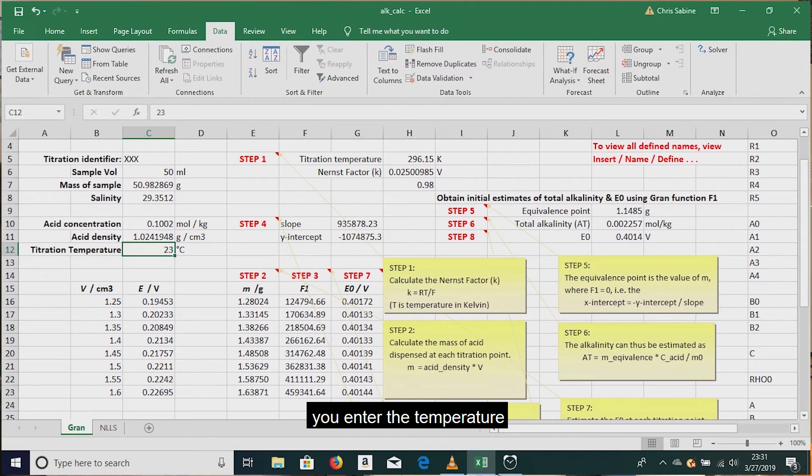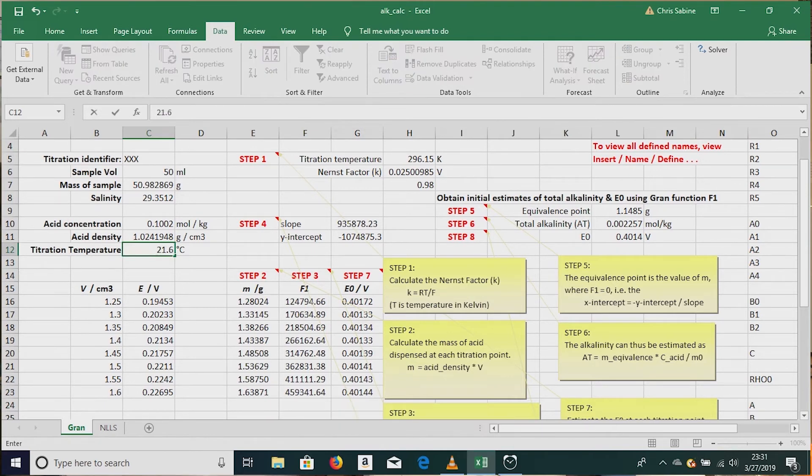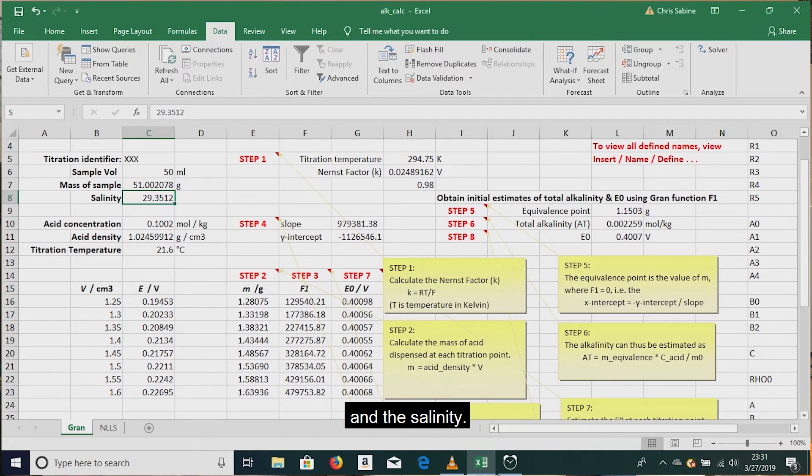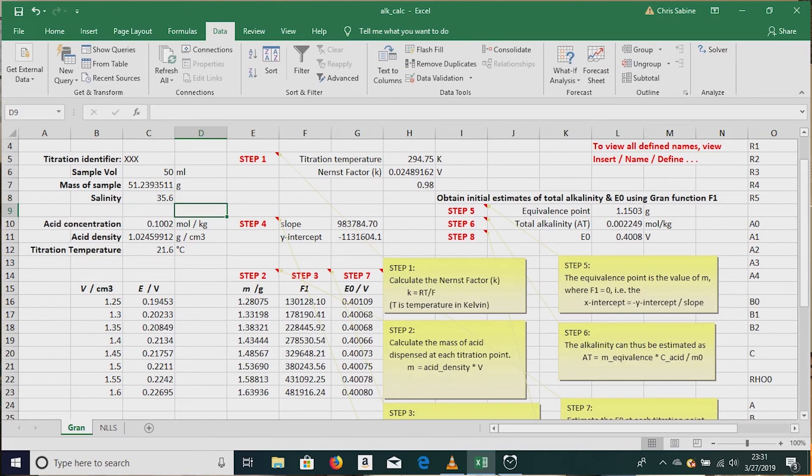I want to make sure you enter the temperature and the salinity. Then you have your preliminary alkalinity estimate here, so it's 2276.